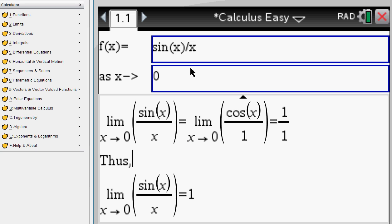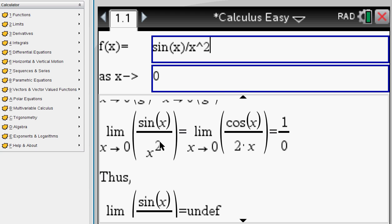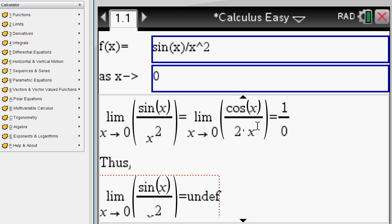So your final answer is 1. Now of course if you change your original function, say divided by x squared, you would end up with a fraction of 1 over 0, which of course will lead to undefined. So step by step solutions here for limits.